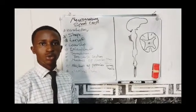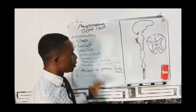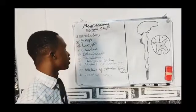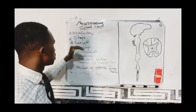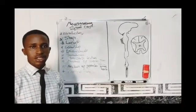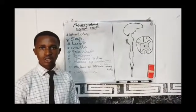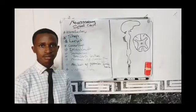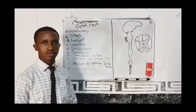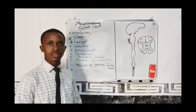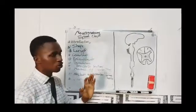Good afternoon friends, welcome to our tutorials. Today we'll be discussing anatomy, specifically the spinal cord under neuroanatomy. Please subscribe — subscription is free. Let's start with an introduction. In the body we have the nervous system, which can be divided into two: the central nervous system and the peripheral nervous system. The central nervous system is further divided into the brain and the spinal cord. Today we are discussing the spinal cord.